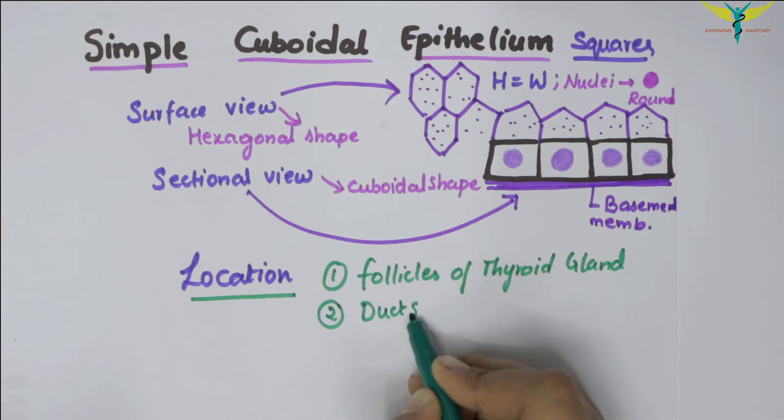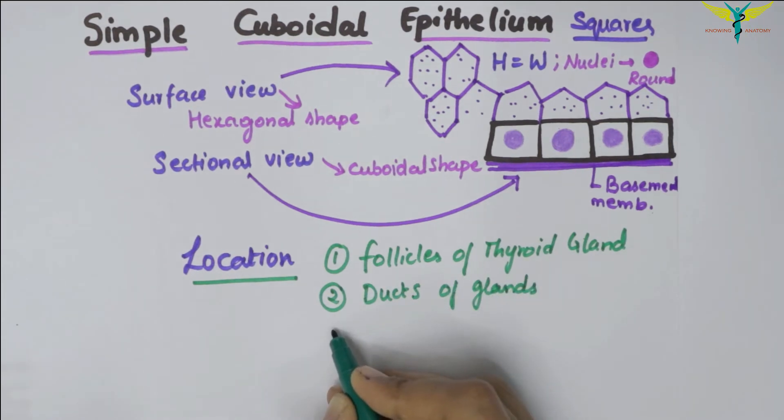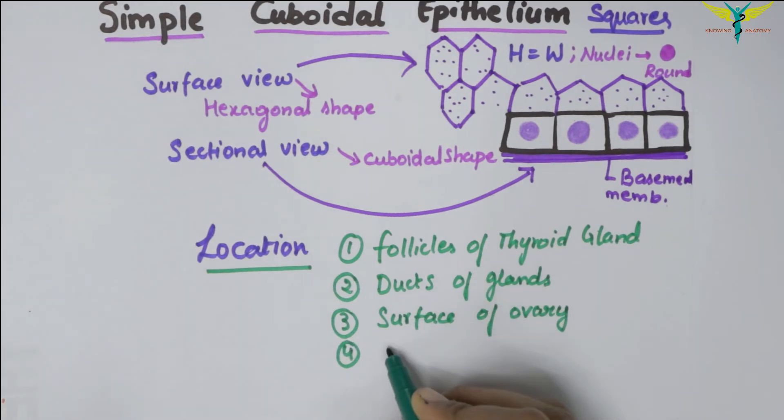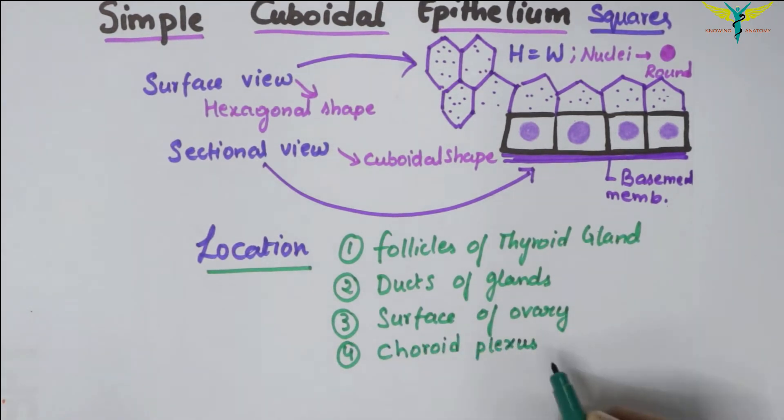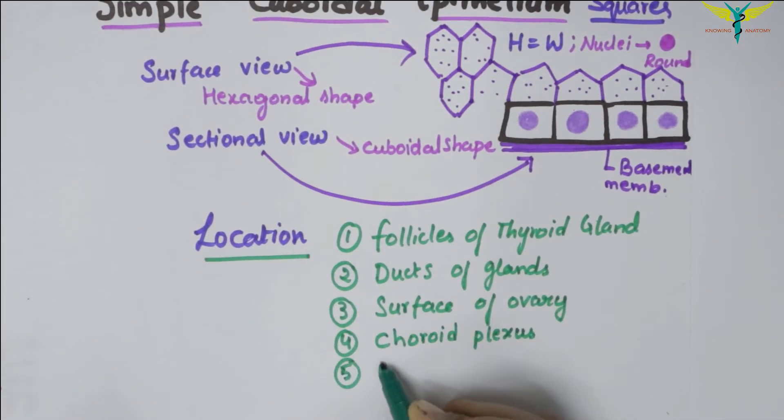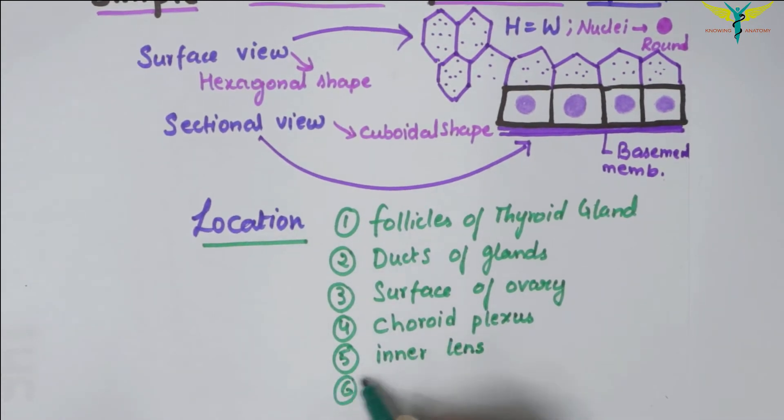These are present on the surface of the ovary, on the choroid plexus, on the inner surface of the lens, and the pigment cell layer of the retina.